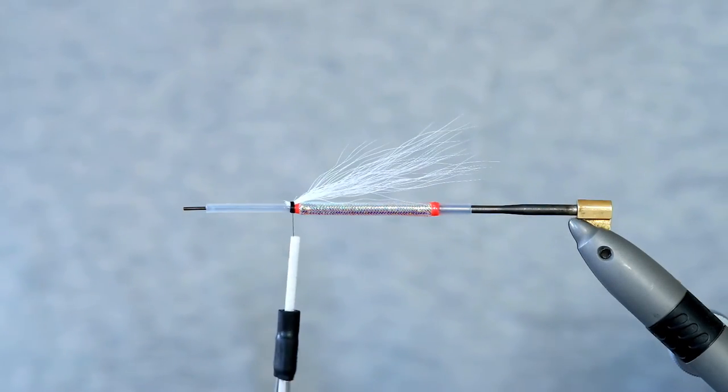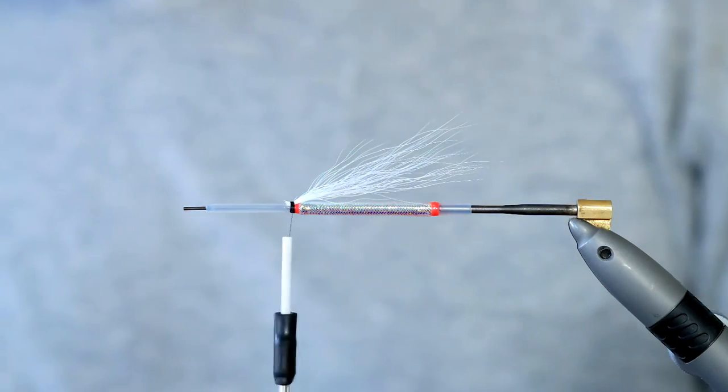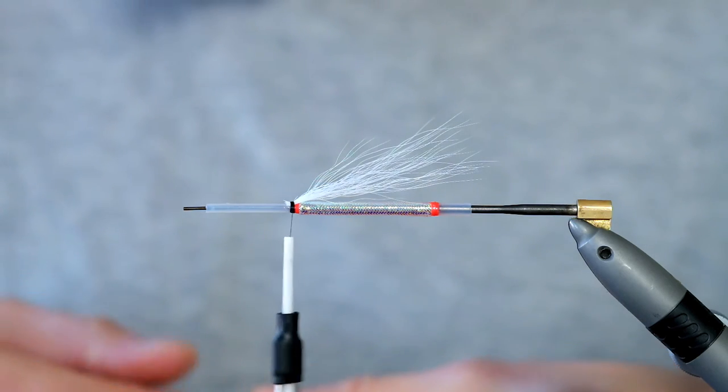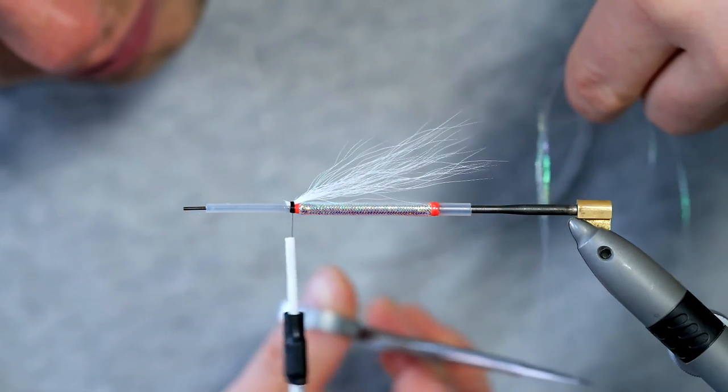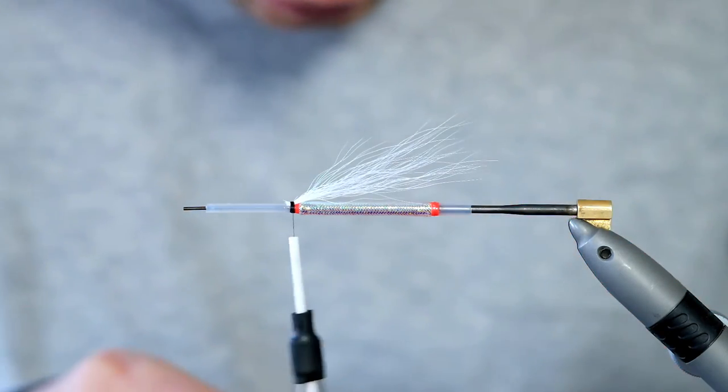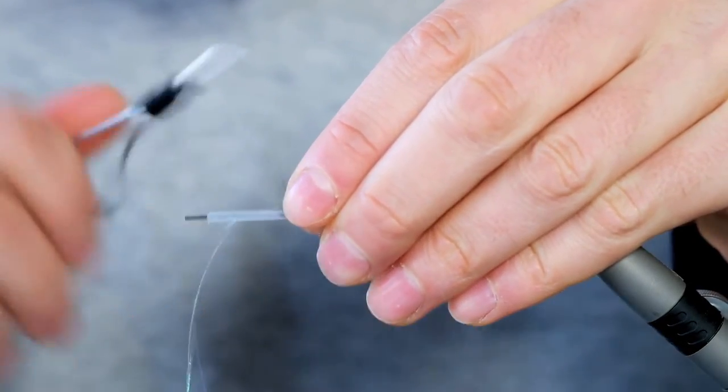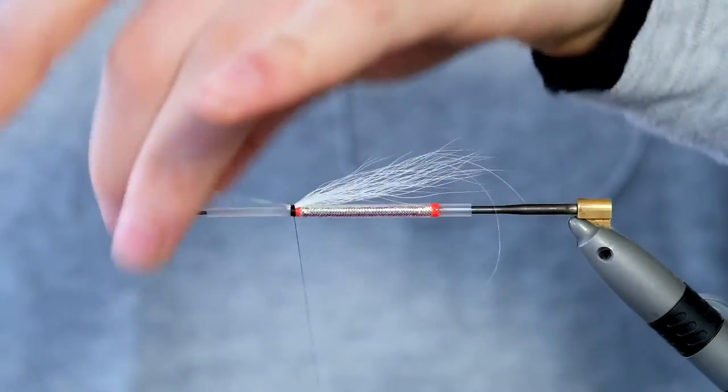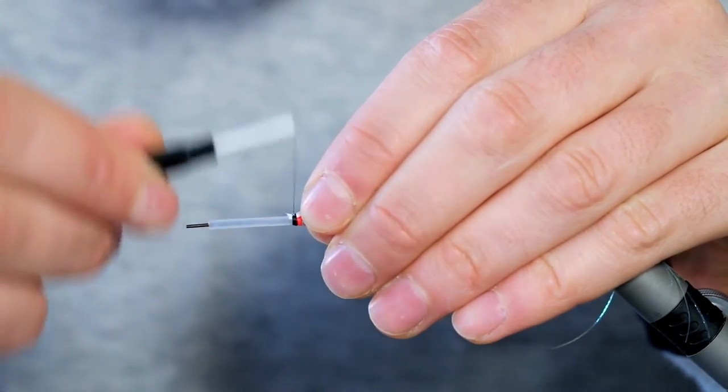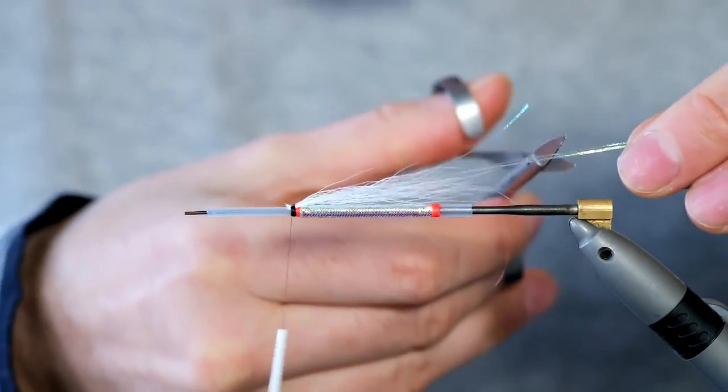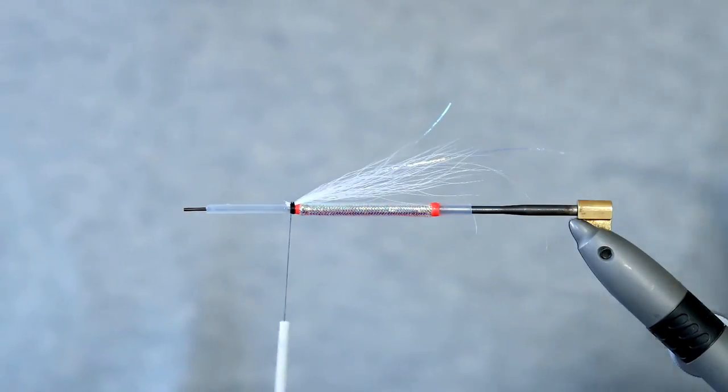Now it's time for some flash. I like to use some comes alive and pearl. Get about three strands and double them over. Tie those in, double them over, spread them a little bit. There we go, cut them to different lengths, there we are.